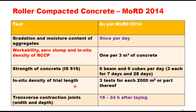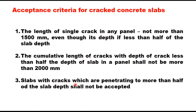After rolling, the in-situ density of the freshly laid roller compacted concrete layer is checked by the sand replacement method using a 200 mm diameter hole. Three density holes are made along a diagonal bisecting the trial length, and the average density of these three holes is taken as the reference density (100%). When testing the in-situ density of regular RCCP work, the field density should not be less than 97% of this reference density.